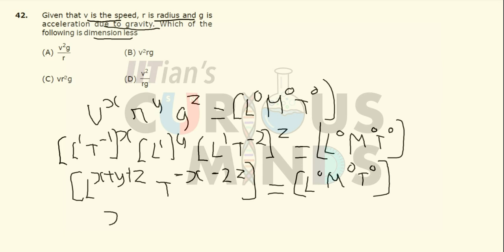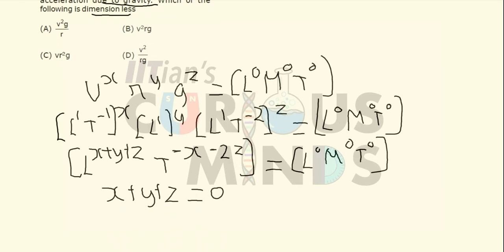So now basically I can say that X plus Y plus Z is equal to 0, and minus X minus 2Z will be equal to 0,